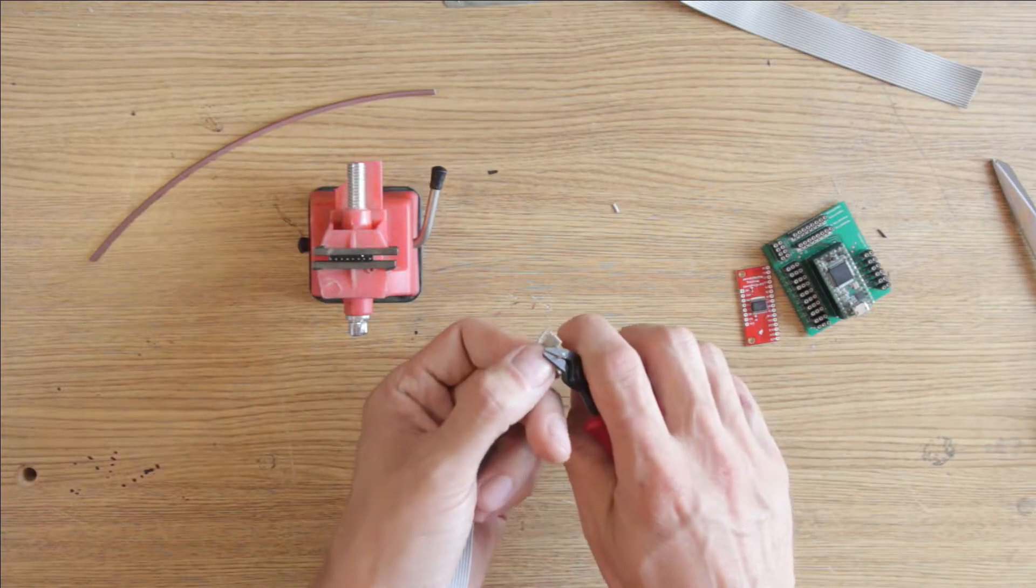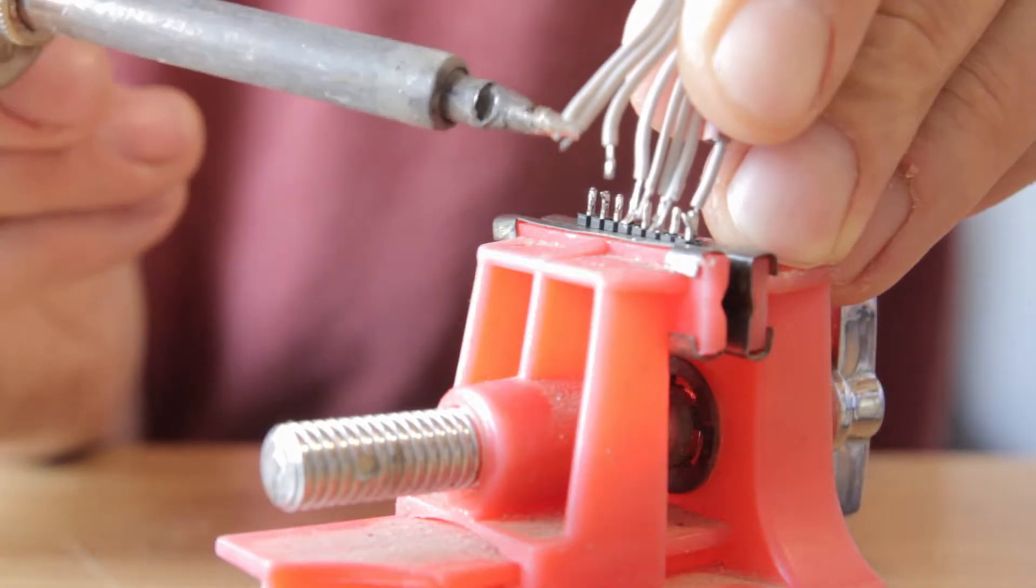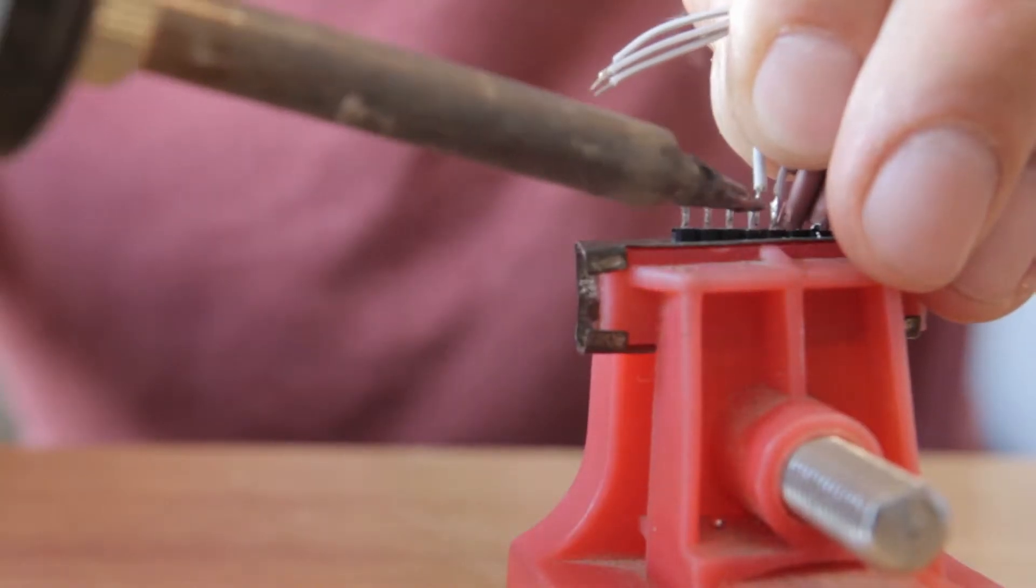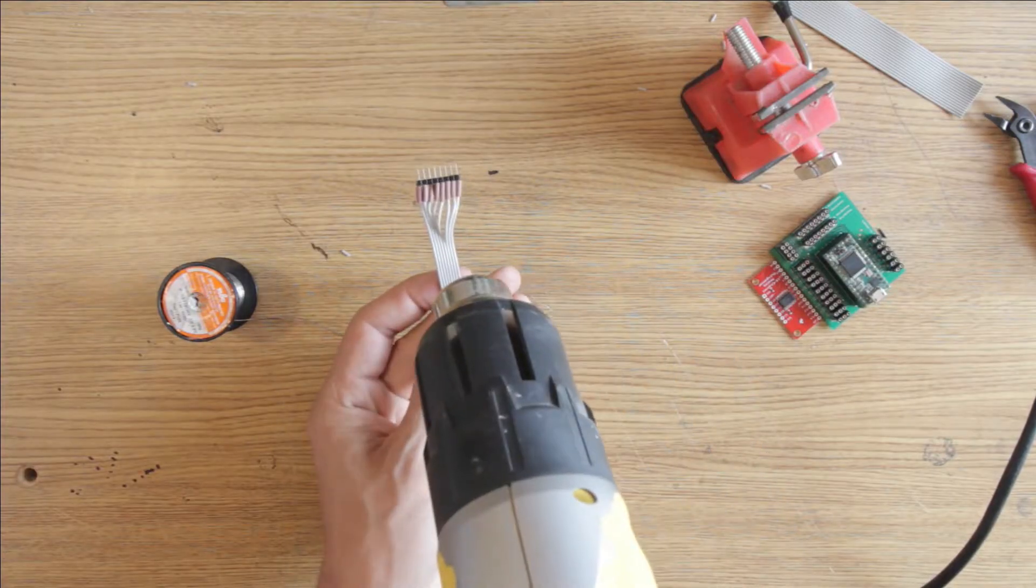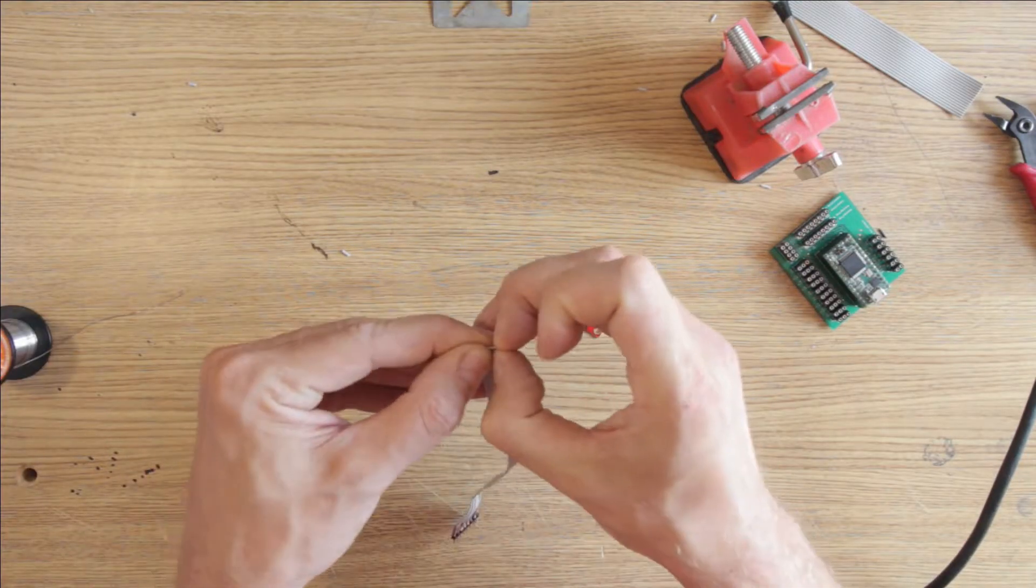This 8-pin cable with male headers is the first step. I prefer this connection via cable instead of plugging the multiplexer in directly, as it gives me more freedom when building my instruments.